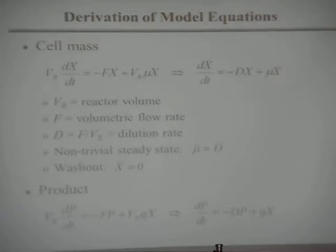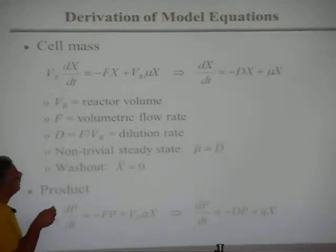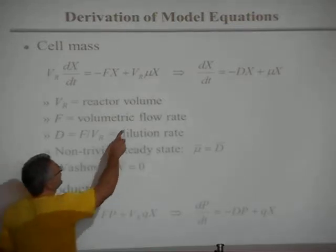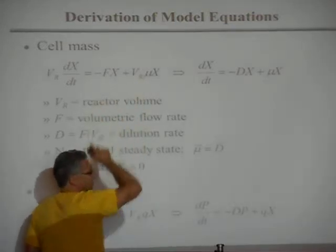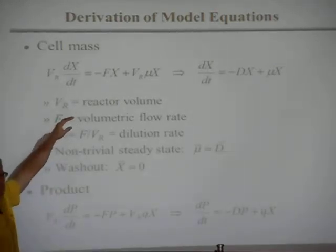And then the cells grow. So you need a function here, mu, that says what rate they grow. That has units of inverse time. It's called the specific growth rate. You multiply that times X times Vr, so this has units of mass per time again. So no cells flowing in, but cells are removed, and cells are created by growth.